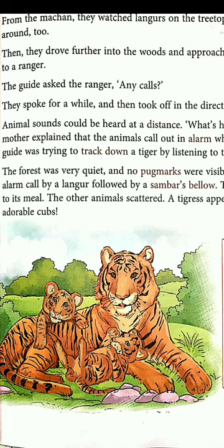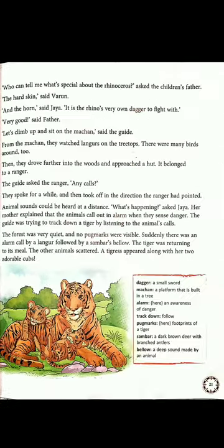The children excitedly watched from a distance as the cubs fed and frolicked — 'frolicked' means played about happily. Just as children play happily with their parents, the cubs played with their mother. The guide explained that tigers are known for their power and strength — they can even kill animals twice bigger than their own size.